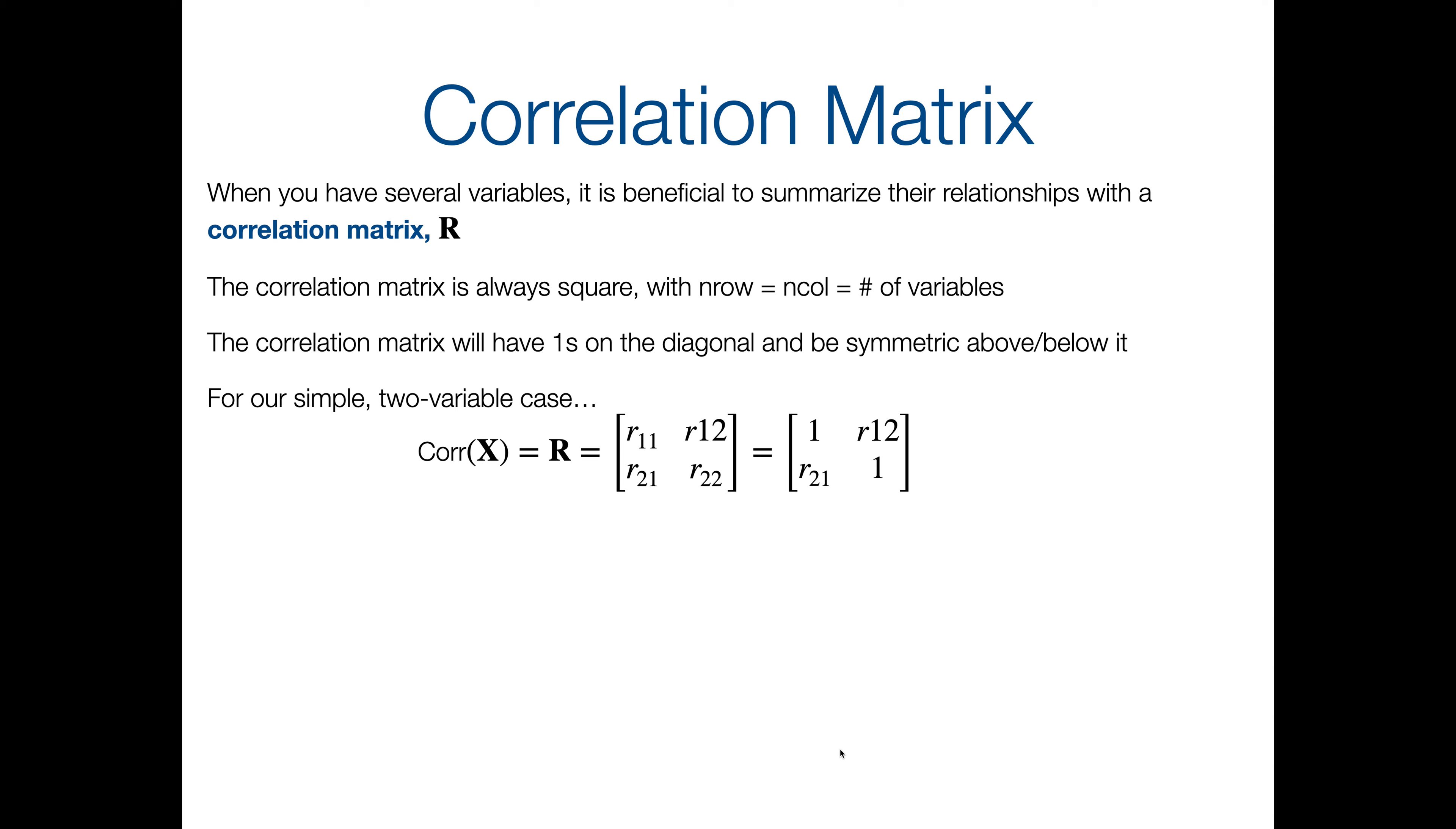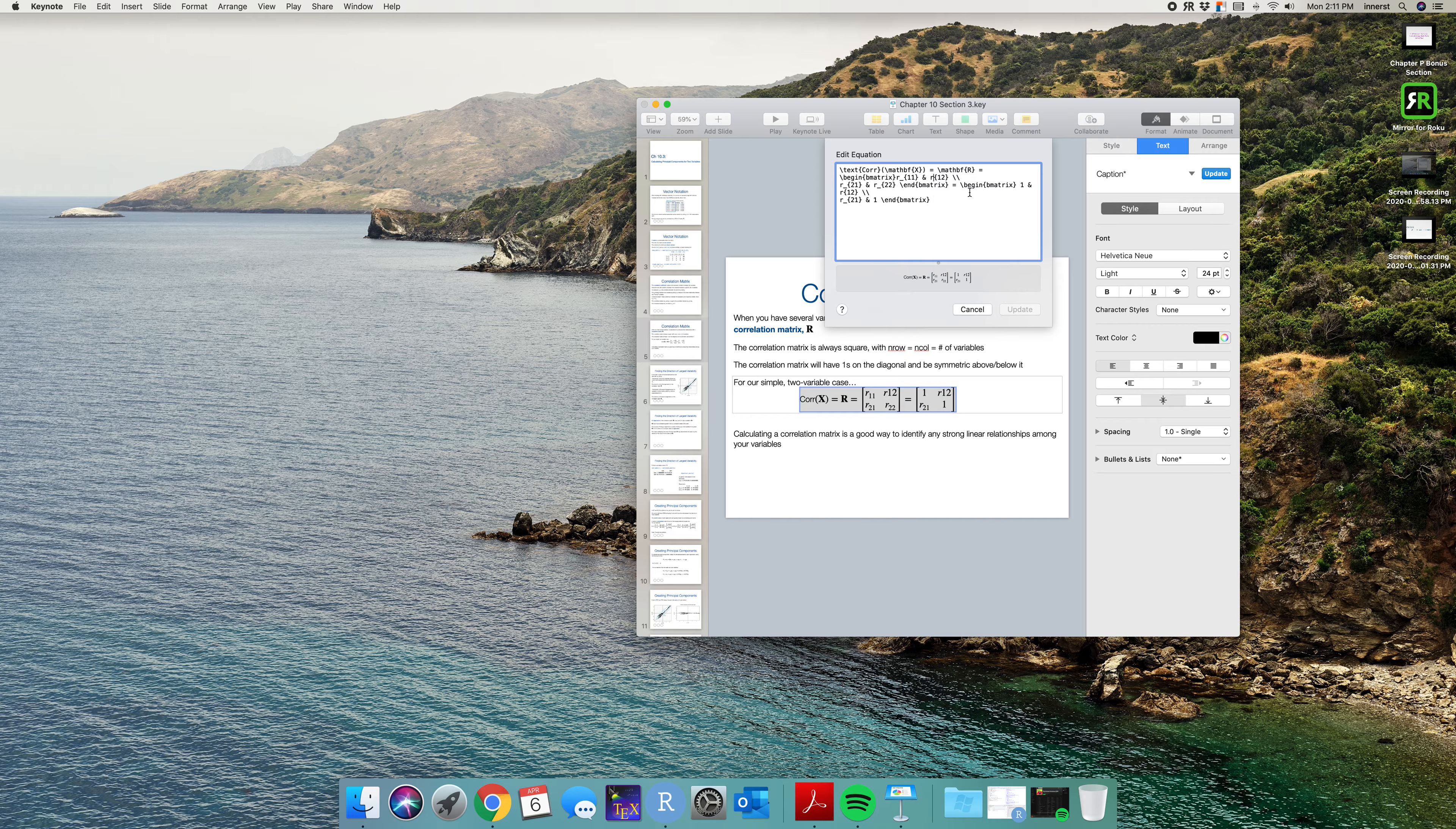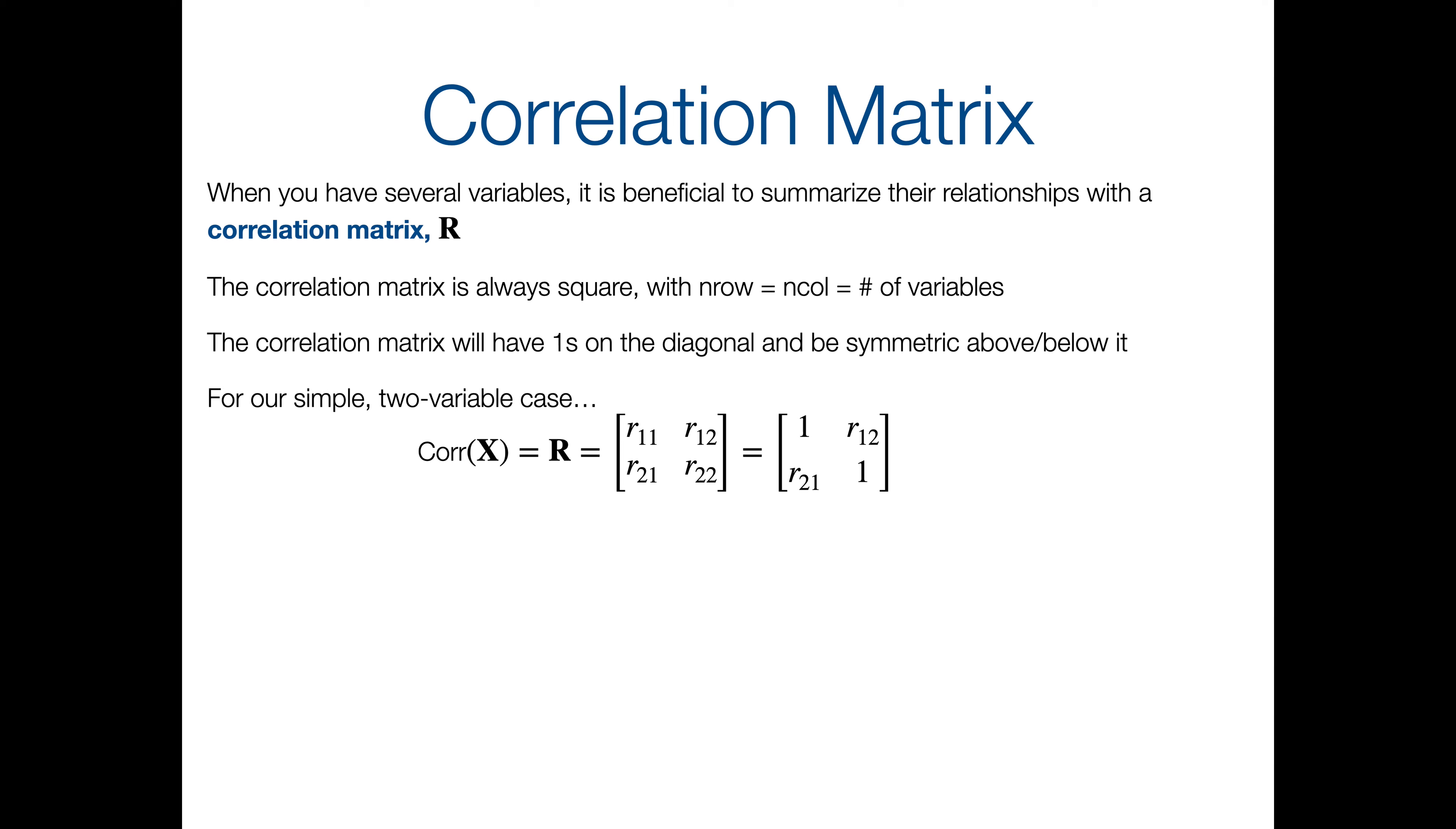And for our simple two variable case we can make one. So you might see it core of x and that's equal to capital R, again bold capital because it's a matrix, and that is equal to, this is what our correlation matrix would look like for our case with just two variables. Again you can have more than two, but this is a simple case. So you've got R11, R12, R21, R22. Remember R11 and R22 are going to be one, and in this case R12 and R21 would be the same.